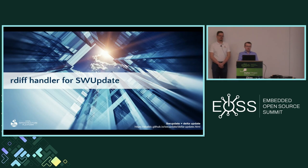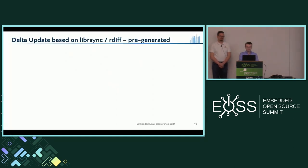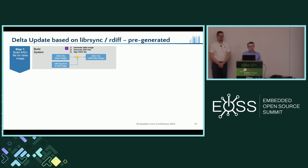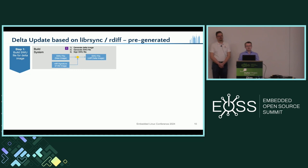Let's look at the rdiff handler for SWUpdate, which uses librsync mechanisms. It's the most simple pattern — you basically don't need to change anything. The first step is to build the image as always. With both Yocto and ISA (which we use in CIP), you have a build pipeline and get a couple of artifacts: a WIC file you can flash to an SD card for first deployment, and an SWU file — the update artifact you transfer to the device.